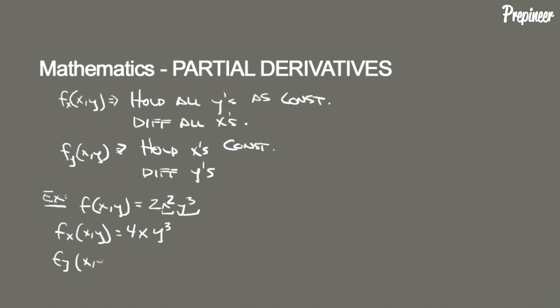We just hold x² constant and differentiate the y function, and we end up getting 6x²y². So as you can see, taking the partial derivatives of the functions, the derivatives are not going to be equal to one another.